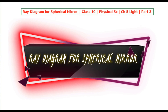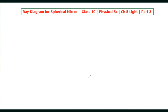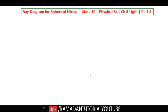We will cover ray diagrams for both convex and concave mirrors. This is the third part. If you want to know the previous parts, follow up on the earlier parts to get the idea, and then start this third part. Let's start the class and discuss how the ray diagram is made.